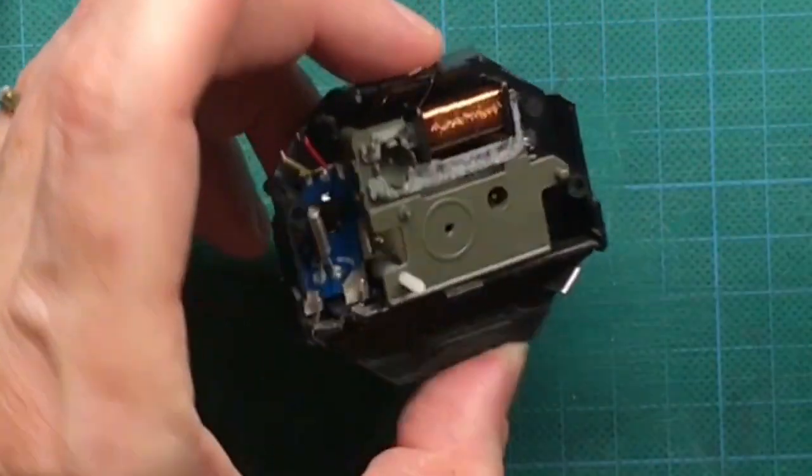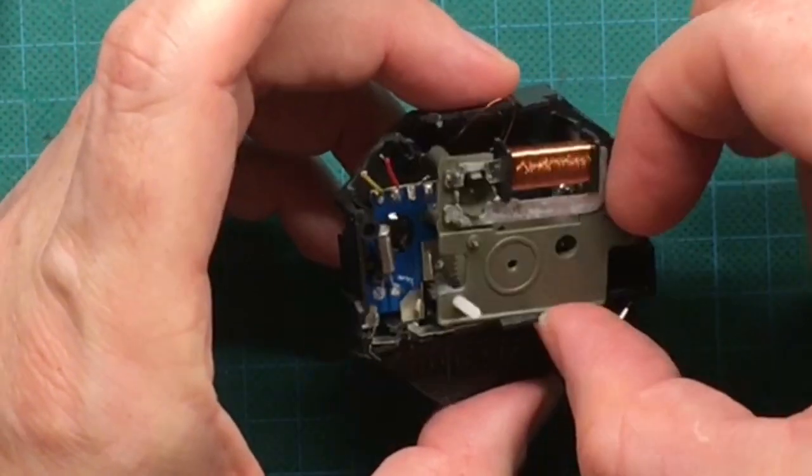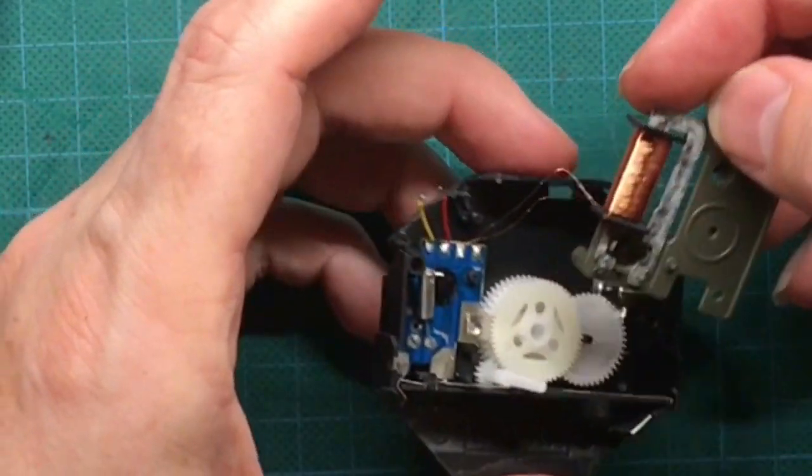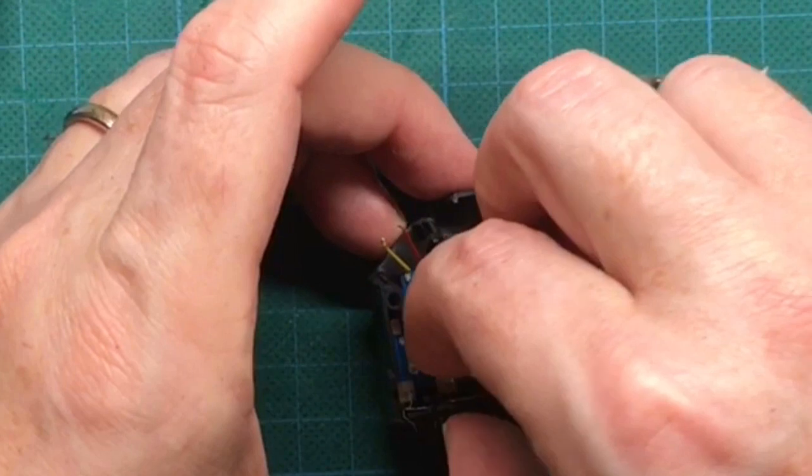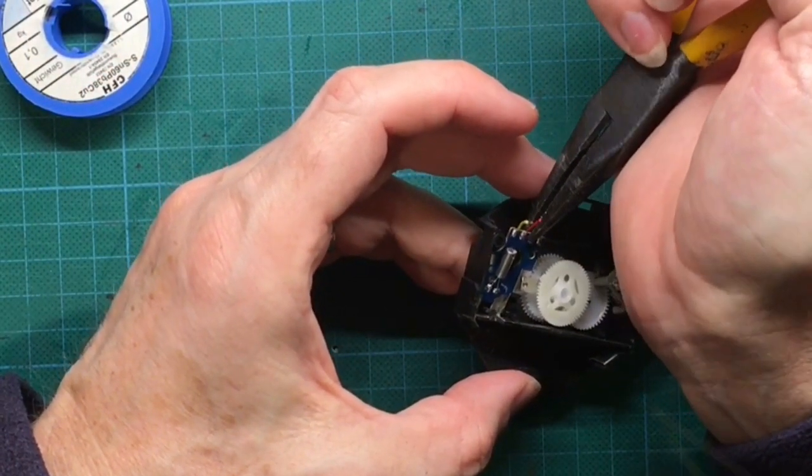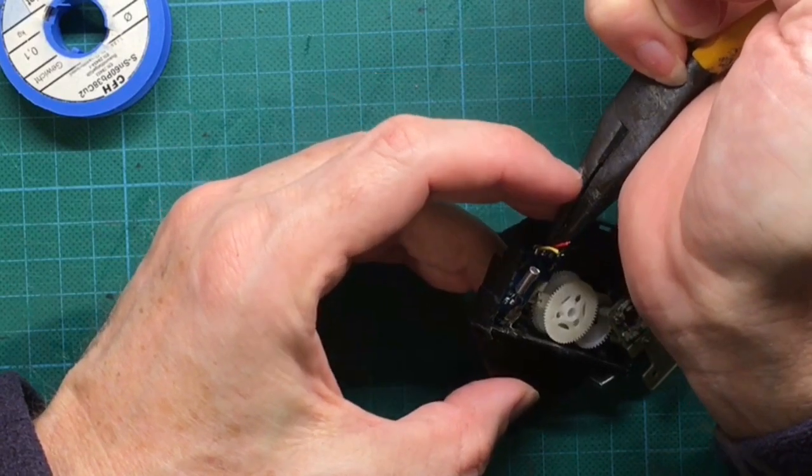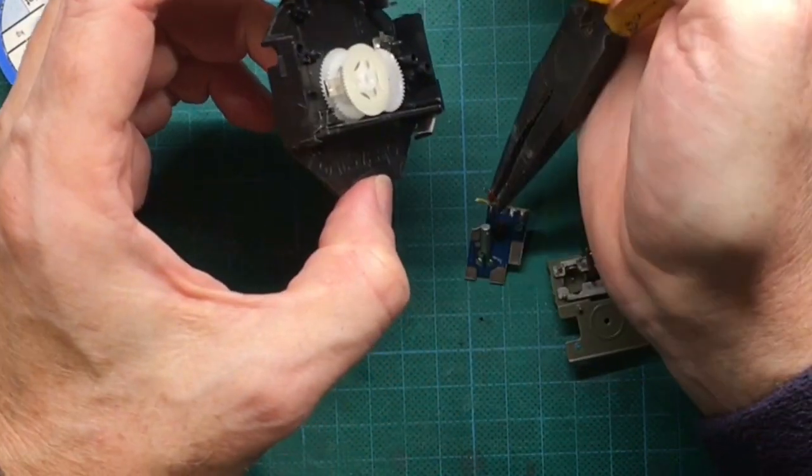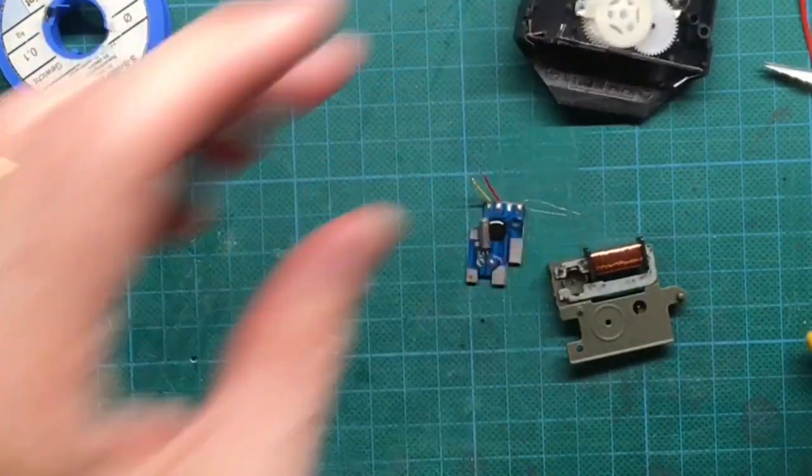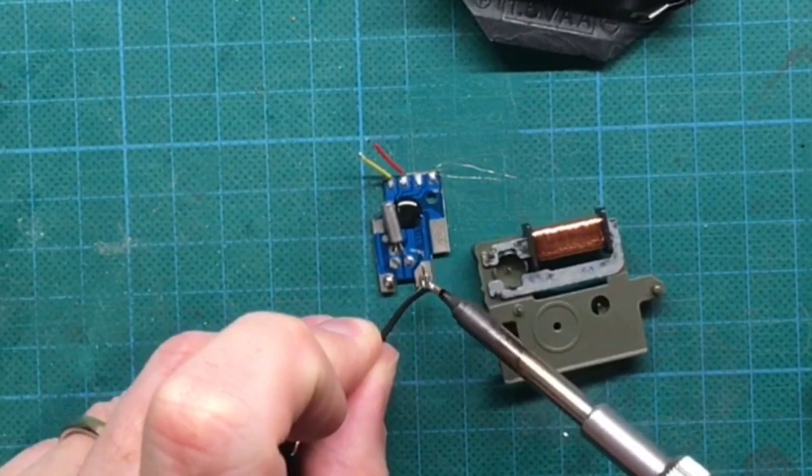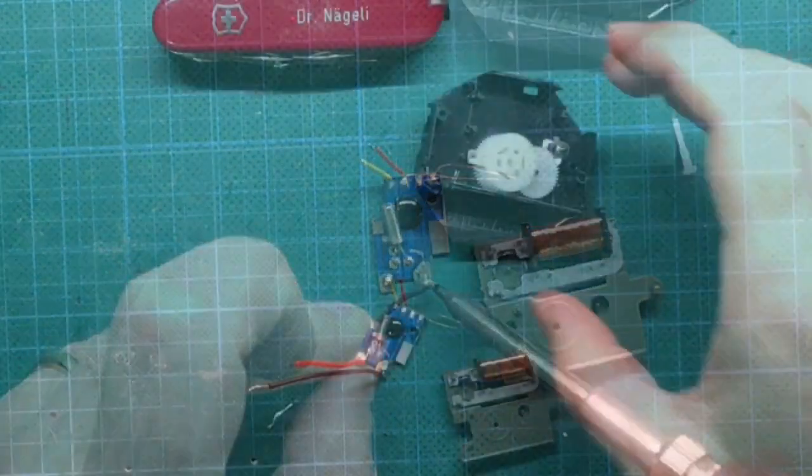In order to solder on the wires for our external battery box we have to remove all the other parts and liberate the blue part where the quartz is mounted on. Solder on the two wires for the external battery box.